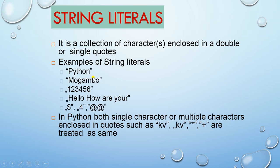For example, the string 'Python' with opening and closing quotes is valid. Using mismatched quotes — opening double and closing single — is invalid. A dollar symbol in a string is invalid. The at-rate (@) symbol is valid. In Python, both a single character and multiple characters enclosed in quotes are treated as strings.